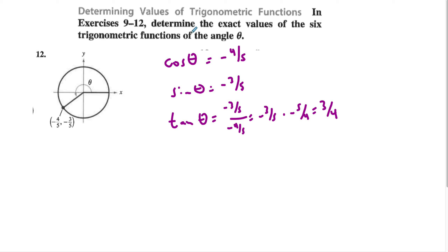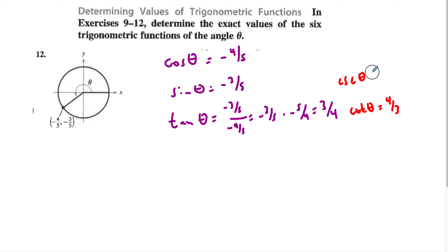Now we can use these values to figure out the corresponding reciprocal functions. The cotangent would be 4/3 — just take the reciprocal of tangent. The cosecant, which corresponds to sine, would be negative 5/3. And the secant, which corresponds to cosine, would be negative 5/4.